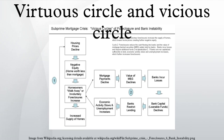In climate change science, feedback loops involve positive feedbacks and negative feedbacks that respectively serve to intensify or dampen the effects of global warming.